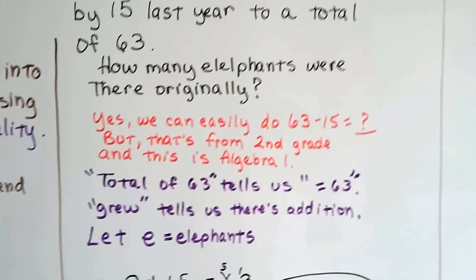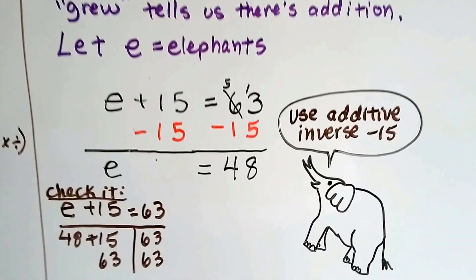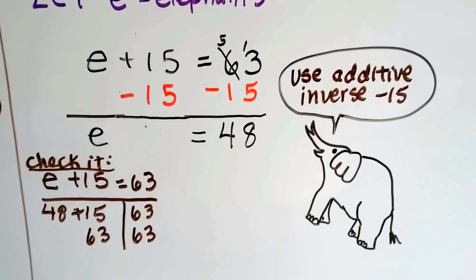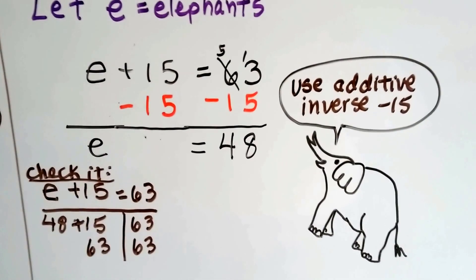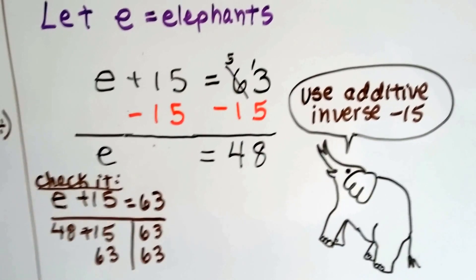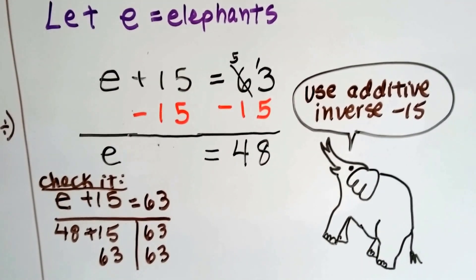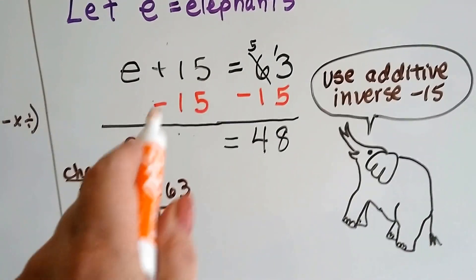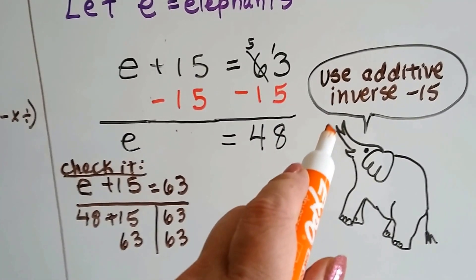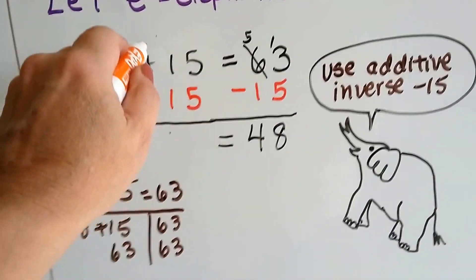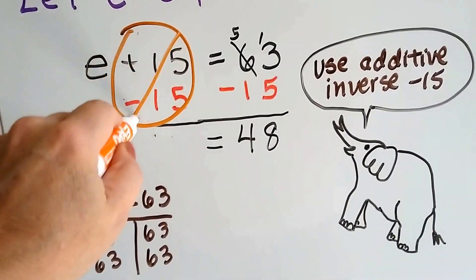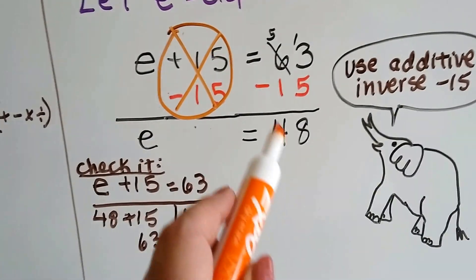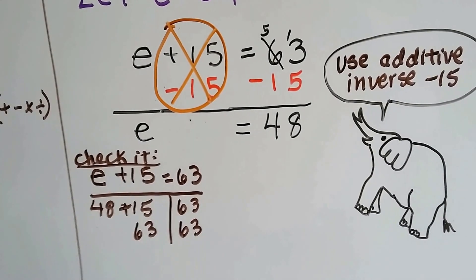So if we let E equal elephants and we write our equation, we've got E plus 15 is going to equal the 63. Now we can see that there's a positive 15 on the left side and we need to get the E alone, don't we? So we subtract 15 from each side of the equal sign. That's using the additive inverse as negative 15. And we create a zero pair here and it cancels out that positive 15. It gets the E by itself. We do 63 minus 15 on this side and get 48.